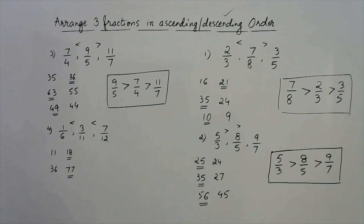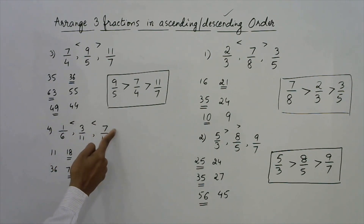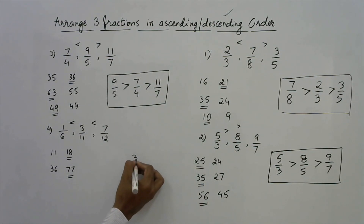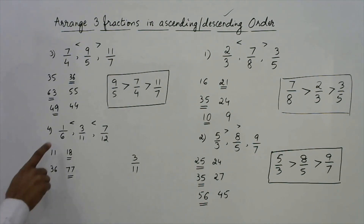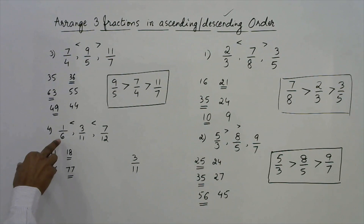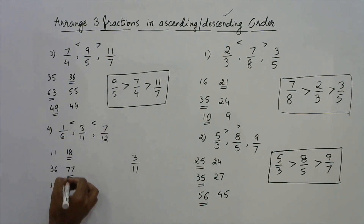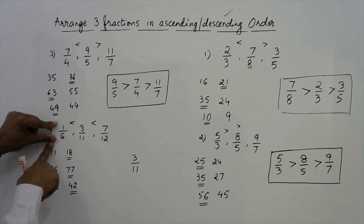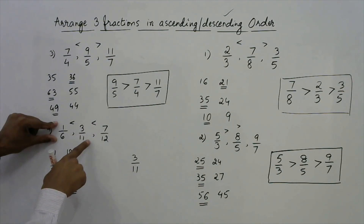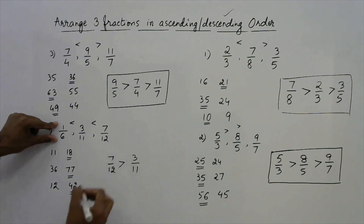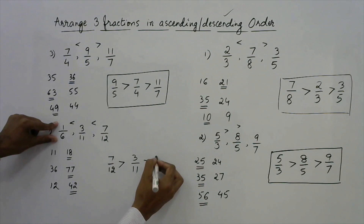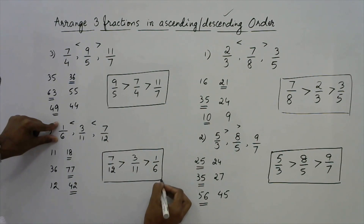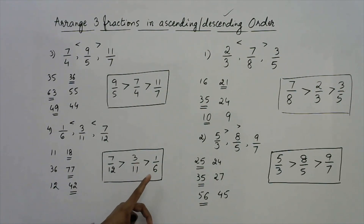Now we don't yet know whether 1/6 or 7/12 is greater. But we know that 3/11 is greater than 1/6 but smaller than 7/12, so 3/11 will obviously come in the middle. Now I just need to compare the first and last: 1 into 12 is 12 and 7 into 6 is 42. On the right-hand side we have the greater product, so 7/12 is greater than 1/6. And 7/12 is already greater than 3/11. So the final order is: 7/12 is the greatest, followed by 3/11, then 1/6.